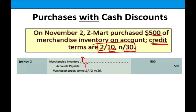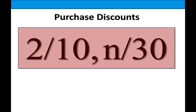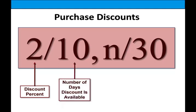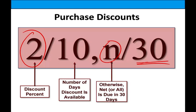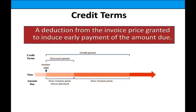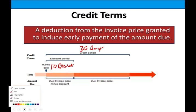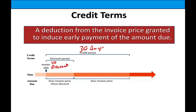We need to understand what 2/10, n/30 means. It means the seller has given you a discount of 2% if you pay within 10 days — that's the discount period. Otherwise, the full amount is due within 30 days — that's the credit period. Why do sellers offer this discount? Because they want to be paid early. Cash is king — they need the cash for other purposes.